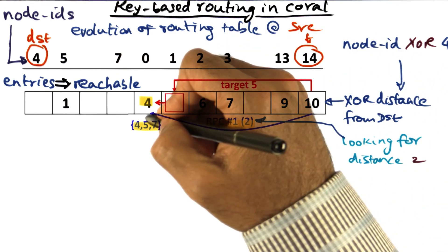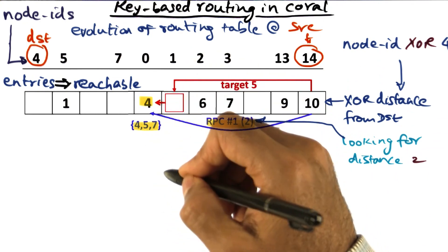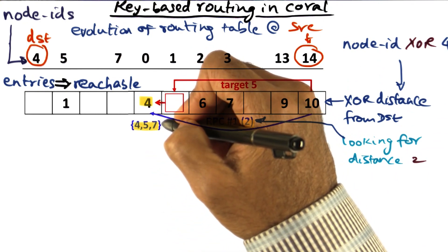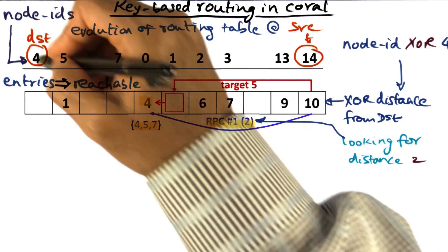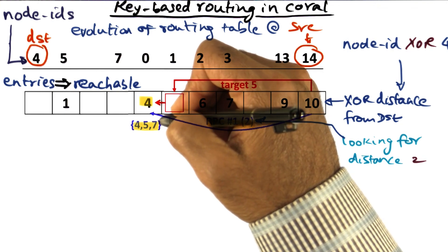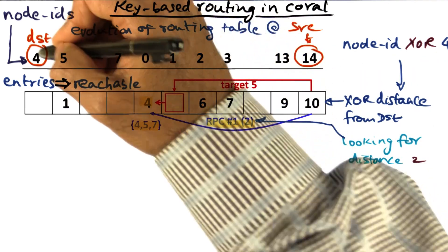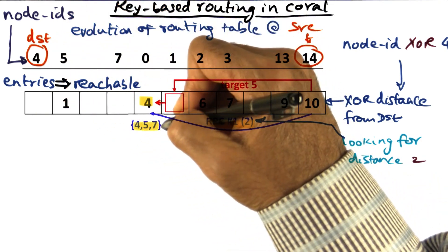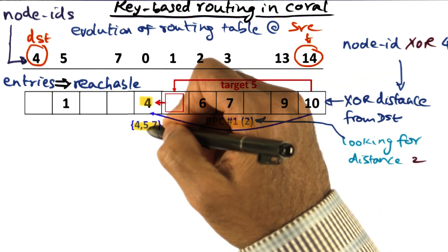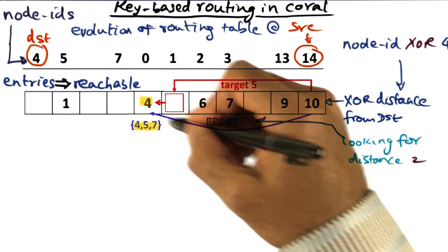I make an RPC call to this node. I go to him and ask: I am looking for someone who is two distant from my desired destination, which is four. When I send this request to him, he responds and says: I have information on three nodes that are not exactly two distant but close enough. Nodes four, five, and seven are the nodes that I have who are close enough to the two-distant neighbor that you're looking for.